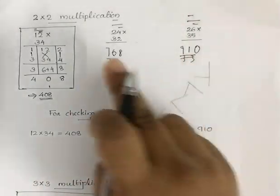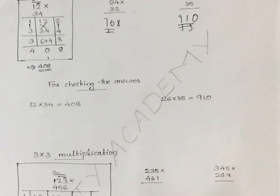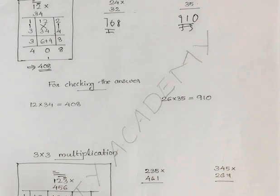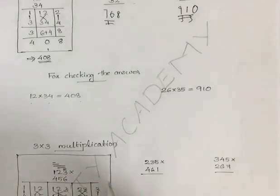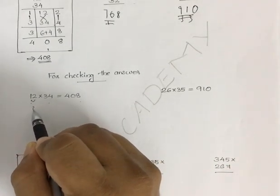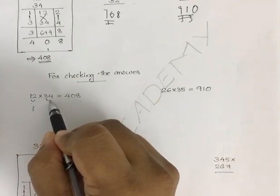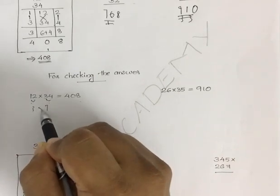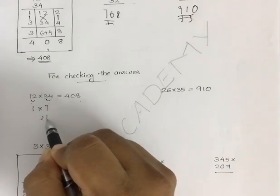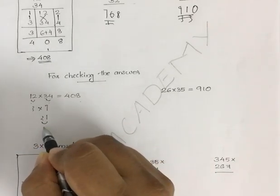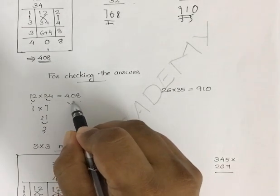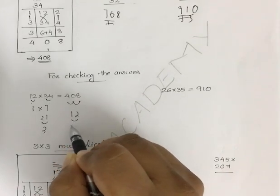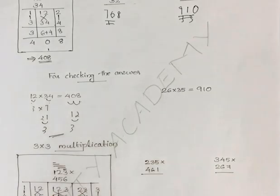Similarly, you can try with any two two-digit numbers. I'll also tell you one more important method to check the answer — not only for this, but for any multiplication. Suppose 12 into 34 gives 408. To check: add the digits of 12 — 2 plus 1 is 3. Add the digits of 34 — 3 plus 4 is 7. Multiply: 7 times 3 is 21. Add again: 2 plus 1 is 3. Now add the digits of the answer 408 — 4 plus 0 plus 8 is 12, then 1 plus 2 is 3. Both sides give 3, confirming the answer is correct.